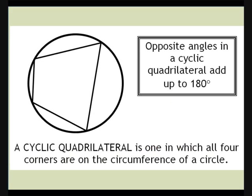A cyclic quadrilateral is a quadrilateral for which all four corners lie on the circumference of a circle. The opposite angles in a cyclic quadrilateral add up to 180 degrees.